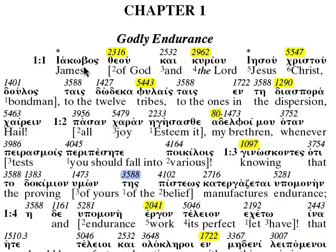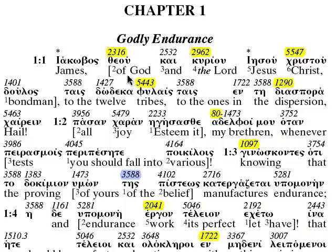And 'Iakovos' — I went to a school called St. Jacobi, a Lutheran school when I was a child. It was German — 'Jacoby,' 'Iakovos.' And James is now described as a bond man — almost in some places it could be a slave.